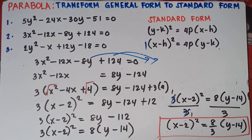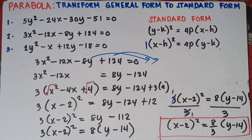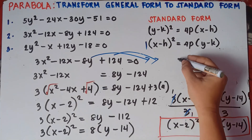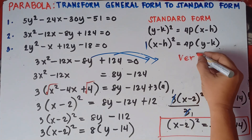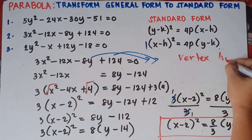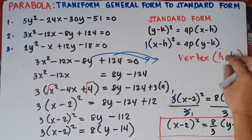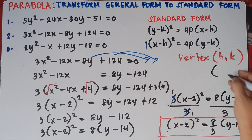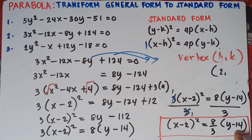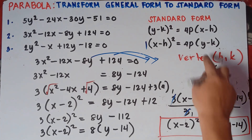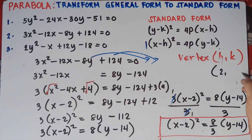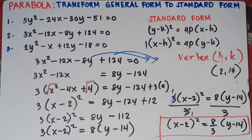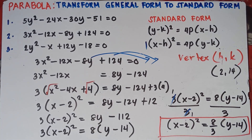Now to find the vertex, vertex = (h, k). h is found beside x: this is -2, so get the additive inverse — h = 2. k is beside y: this is -14, so get the additive inverse — k = 14. The vertex is (2, 14). That's it, class — all done for number 2.